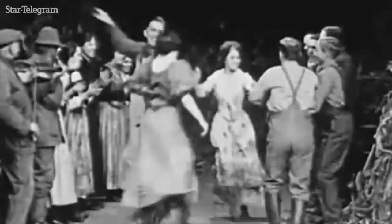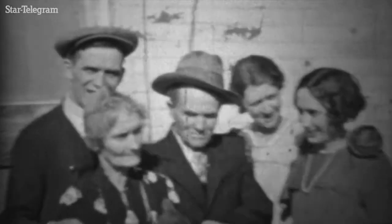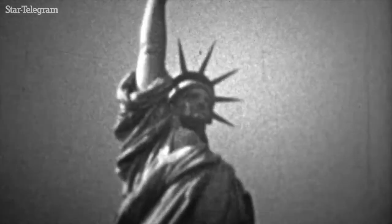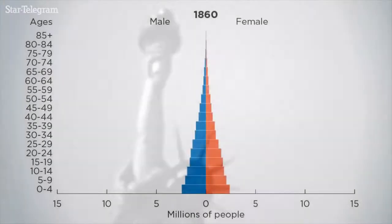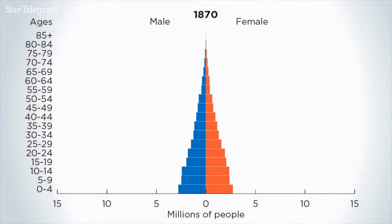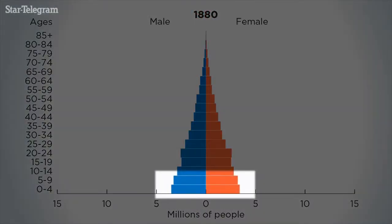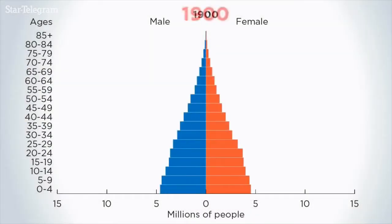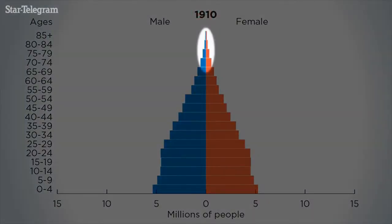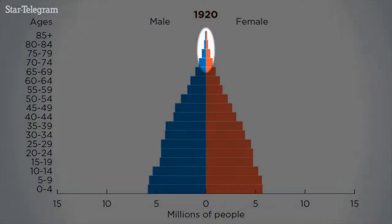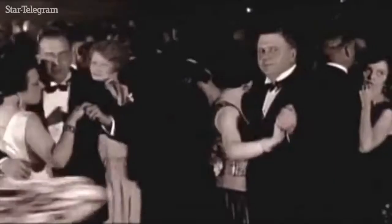As the decades passed, the U.S. population grew rapidly thanks to high fertility and immigration. It kept a pyramid shape with ever-growing bars at the bottom as more children were born, and shorter bars on top because of short lifespans.